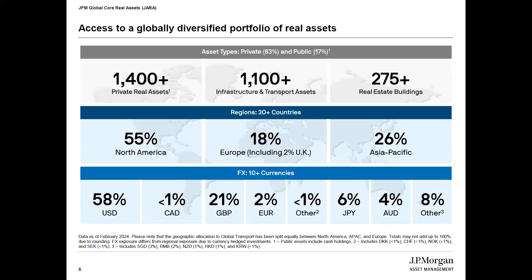JARA is a great option for investors who want global diversification. On a look-through basis we have over 1,400 private assets split between infrastructure, transport and real estate, leveraging off the underlying platform to remove idiosyncratic asset risk and counterparty risk. With a global portfolio comes global currency — we have a mix with a bias towards dollar, and a partial hedge to bring ourselves to 20% sterling.